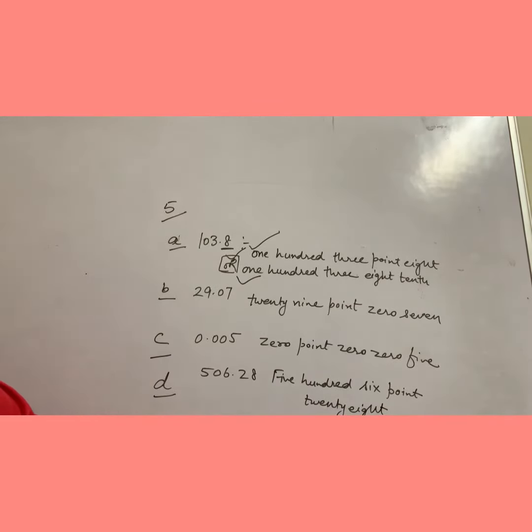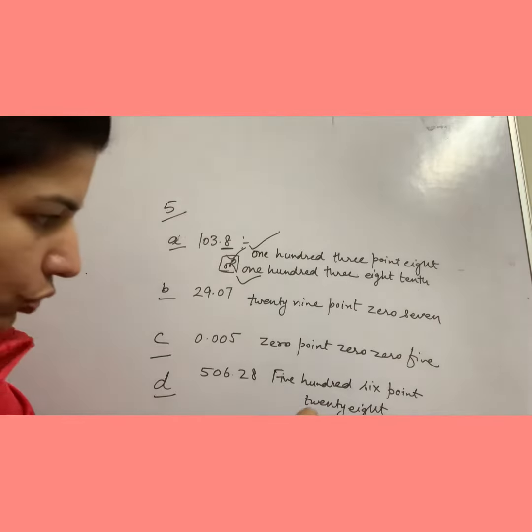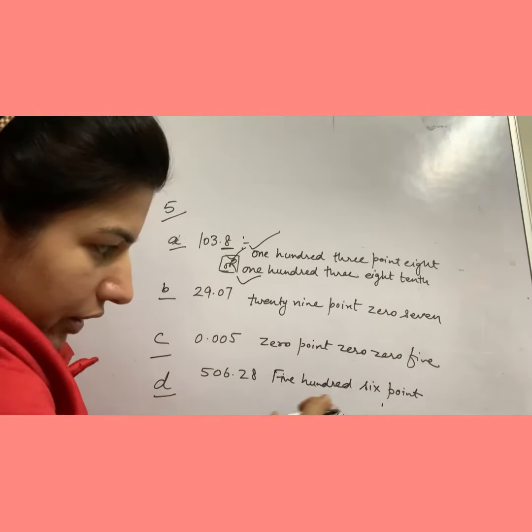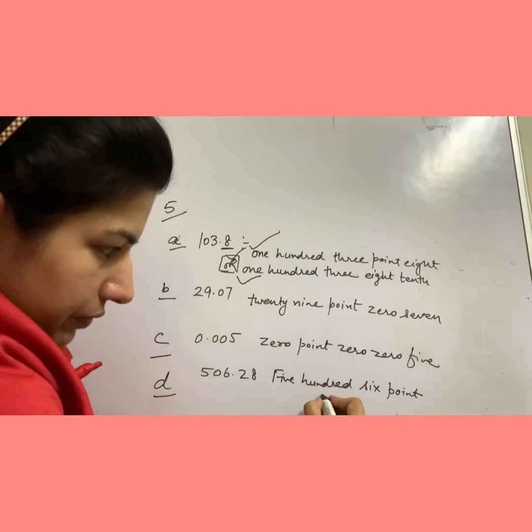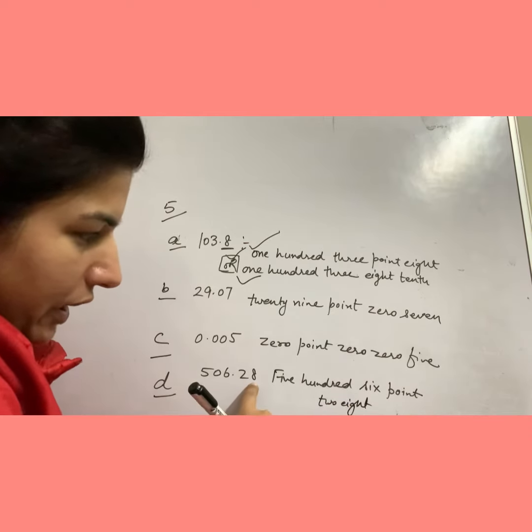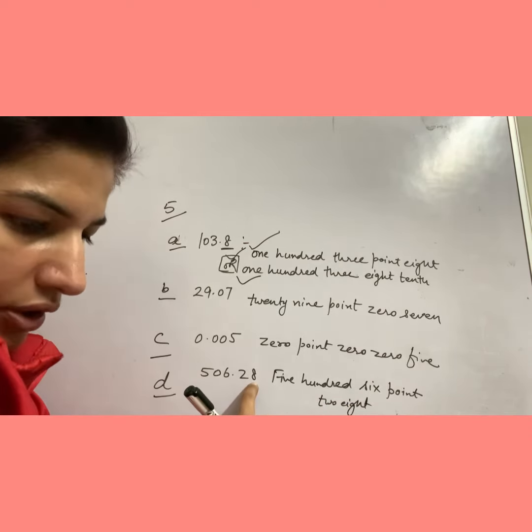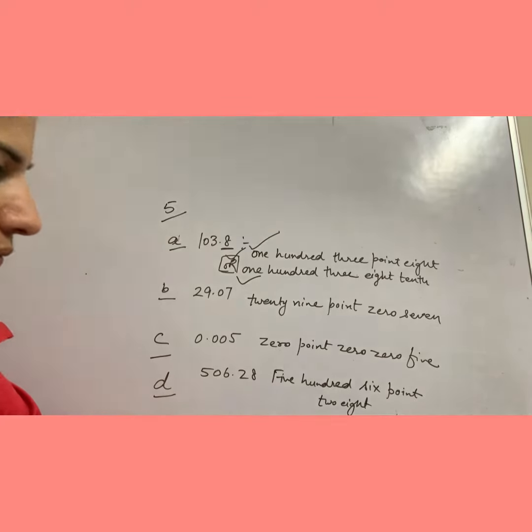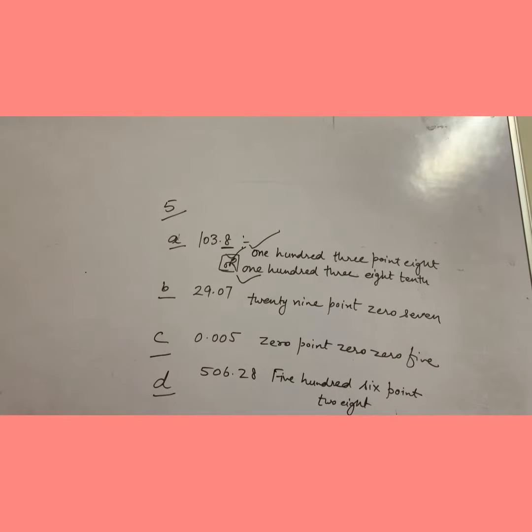Or we can say it two eight, two eight. We can write it two eight or twenty eight hundredths. So we have two methods to write these numbers in words.